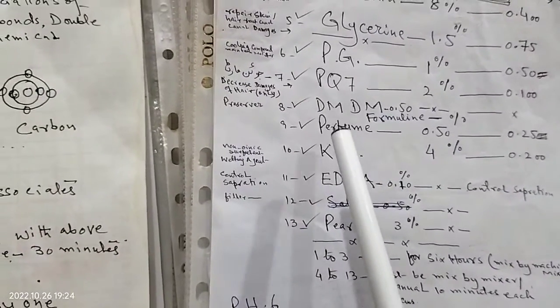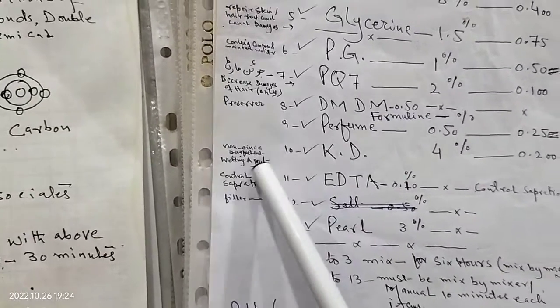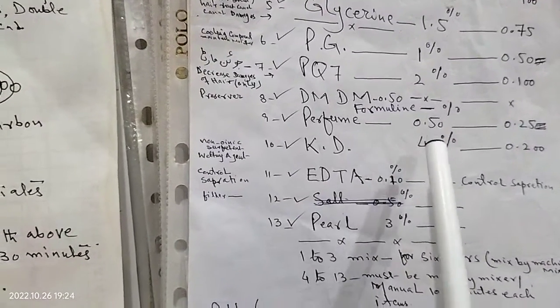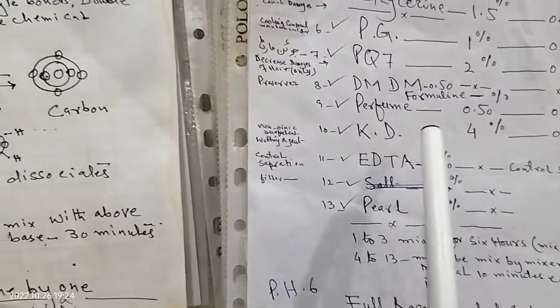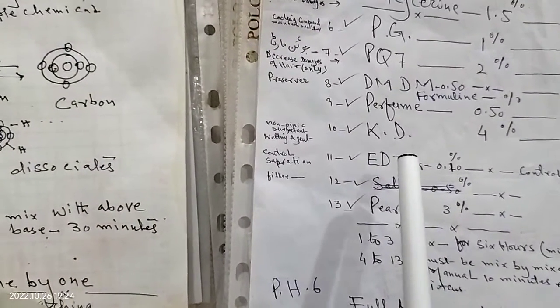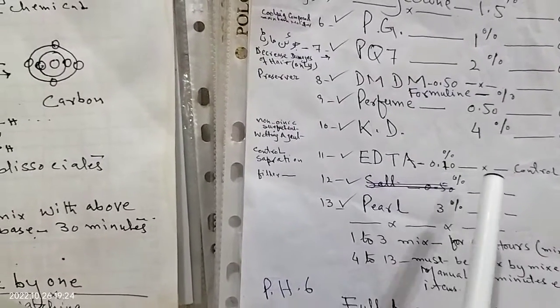KD, it is a weighting agent, 4%, 200 gram. EDTA 0.10%, 100 gram. EDTA 0.10% controls separation.